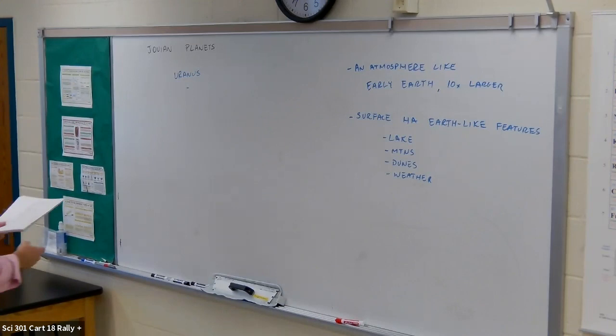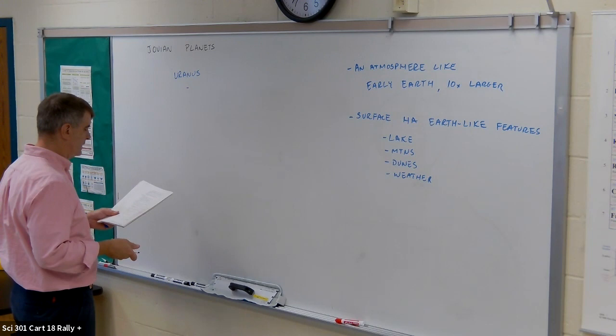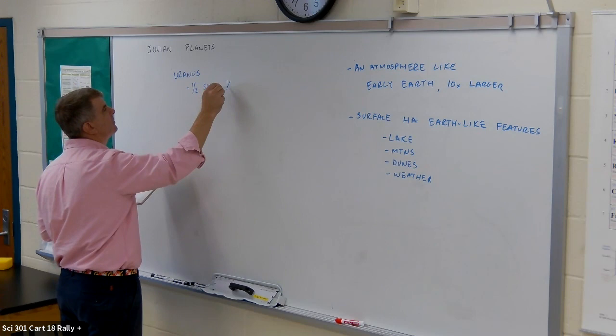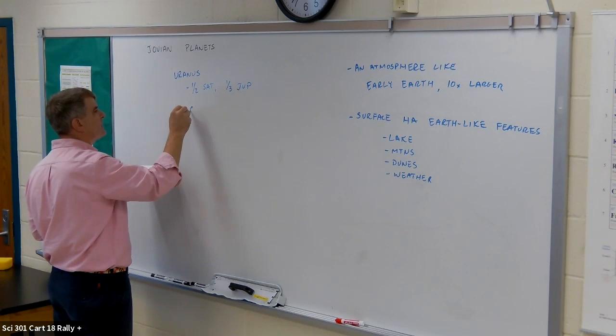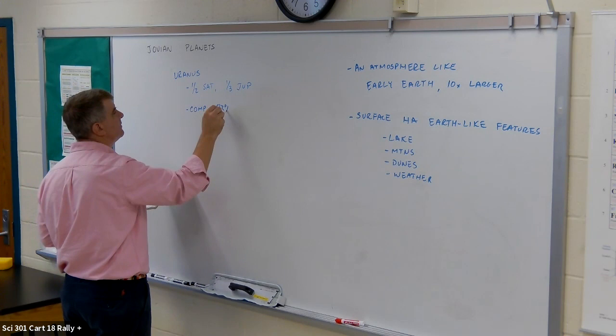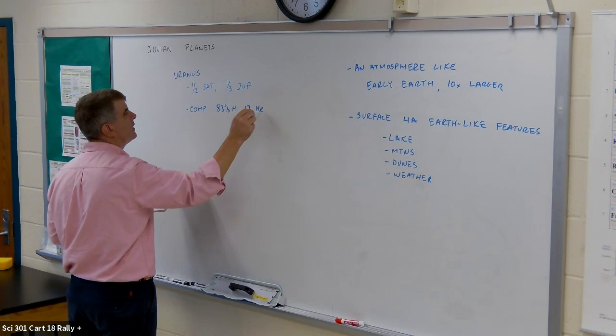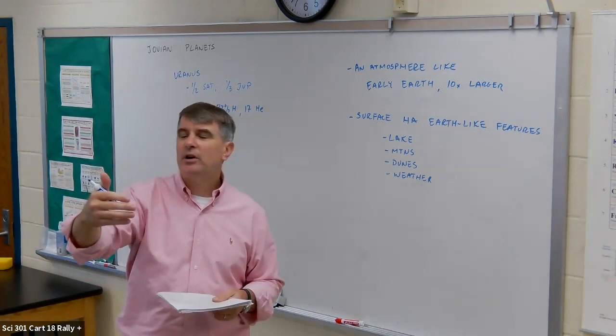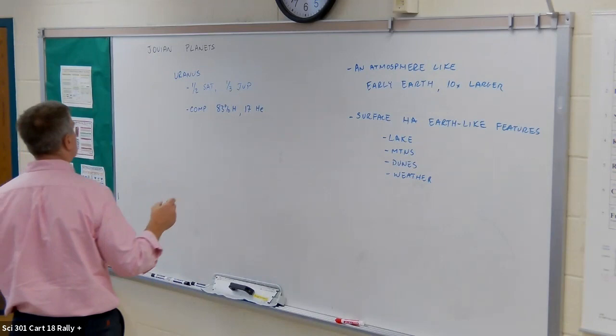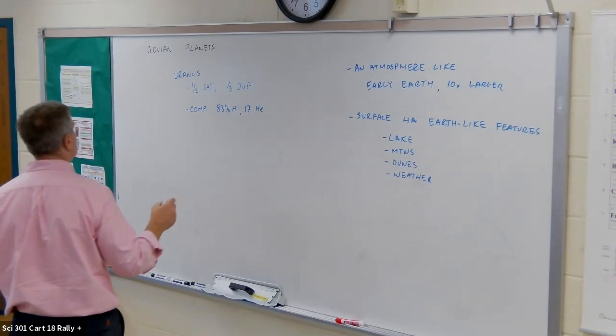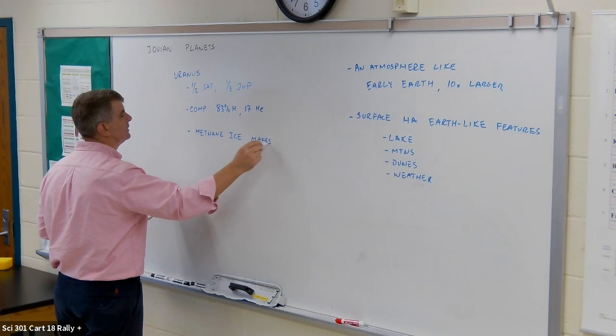Uranus is about half the size of Saturn and about a third the size of Jupiter. Its composition is a little different: 83% hydrogen, 17% helium. It has a higher methane content, and because it's farther out, the methane is in ice form. That methane ice is what makes Uranus blue — that's where you get the blue color.